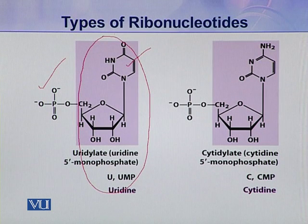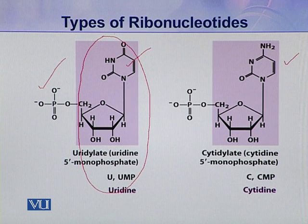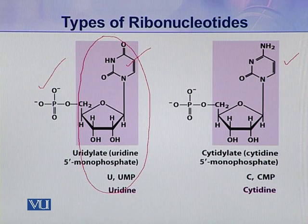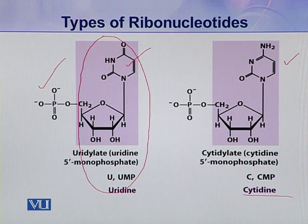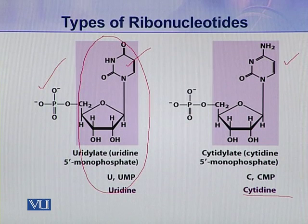The fourth and last type of ribonucleotide is cytidylate. In cytidylate, the nitrogenous base is cytosine, along with the pentose sugar and phosphoric acid. When cytosine attaches with pentose sugar it makes cytidine, and when a phosphoric acid is attached to this cytidine, a complete nucleotide — cytidylate — is formed.